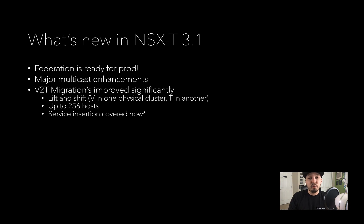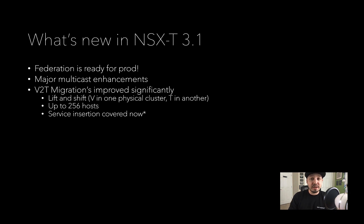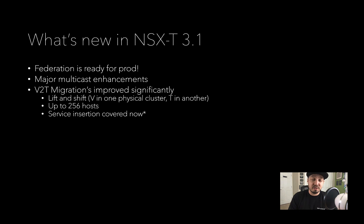One other thing I'll mention is that if you are doing NSX-V, OSPF is currently supported for NSX-V but not supported for NSX-T. So that is one of the biggest barriers for people considering V2T. If that is the case, you can absolutely migrate, but you wouldn't be able to migrate your routing. You'd have to set up your BGP routing in NSX-T where you used to have OSPF in NSX-V.